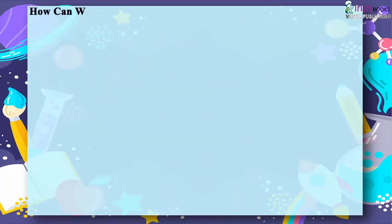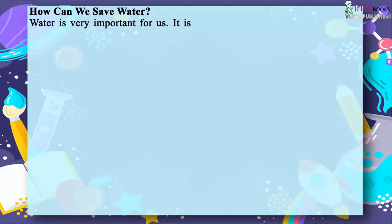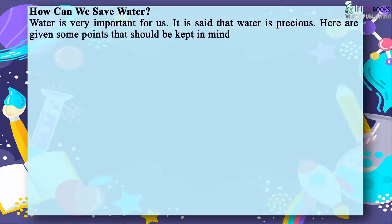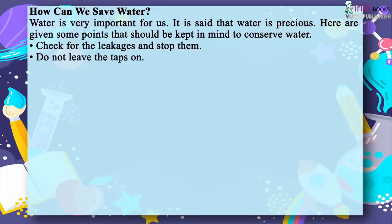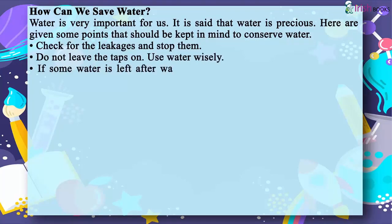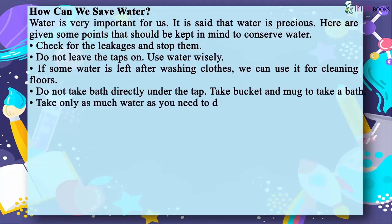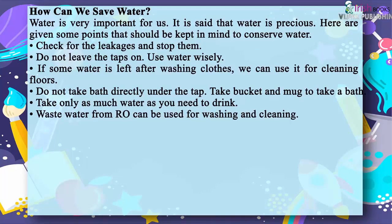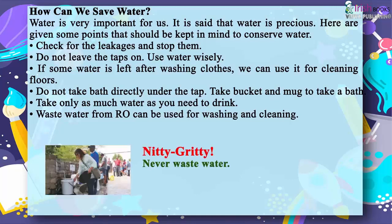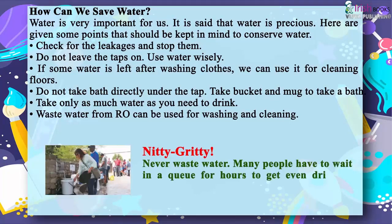How can we save water? Water is very important for us — it is said that water is precious. Check for leakages and stop them. Do not leave the taps on; use water wisely. If some water is left after washing clothes, we can use it for cleaning floors. Do not take baths directly under the tap; use a bucket and mug. Take only as much water as you need to drink. Waste water from an RO can be used for washing and cleaning. Never waste water — many people have to wait in a queue for hours to get even drinking water.